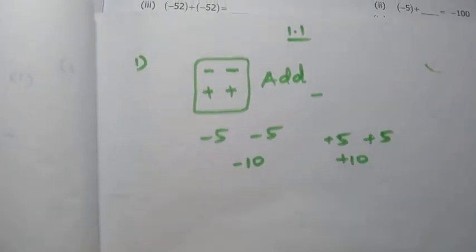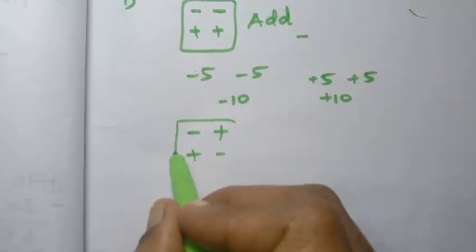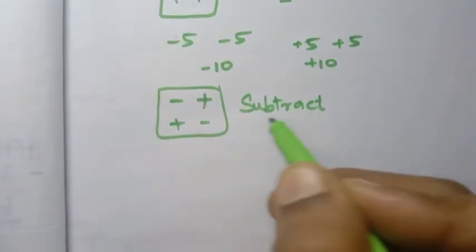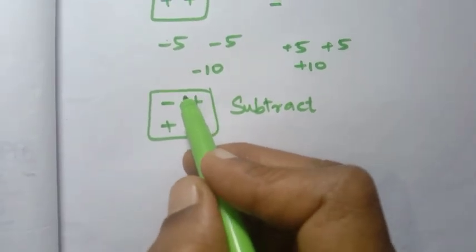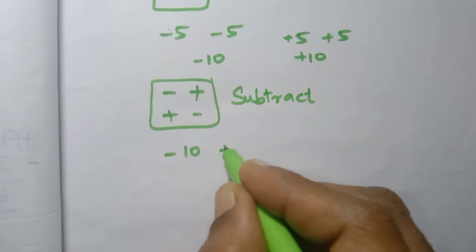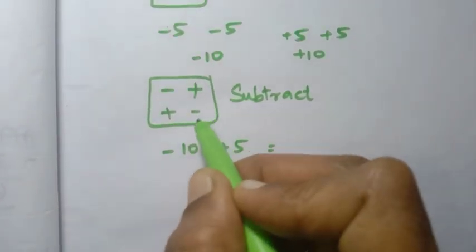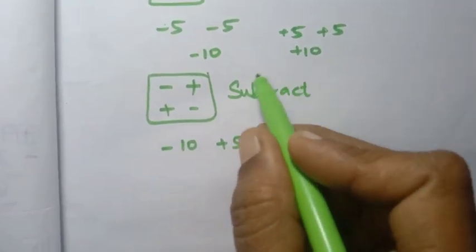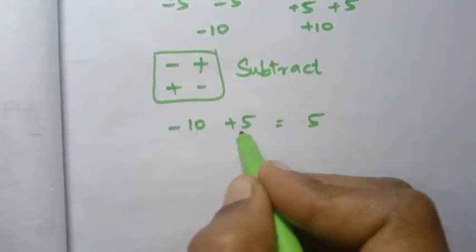But if the symbols are different — minus-plus or plus-minus — these are different symbols. That means we subtract. We take the highest number and subtract: 10 minus 5 equals 5.